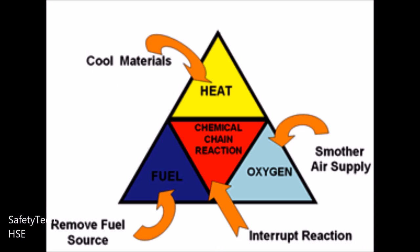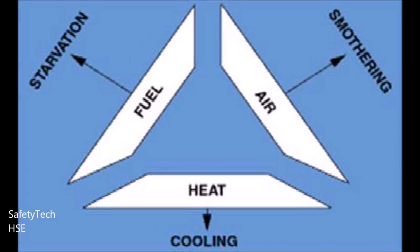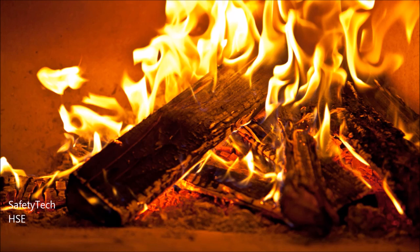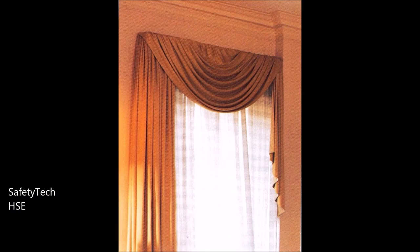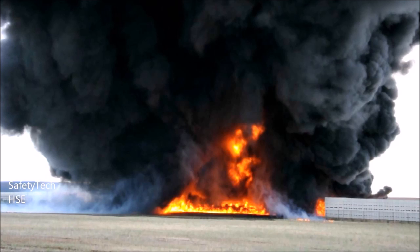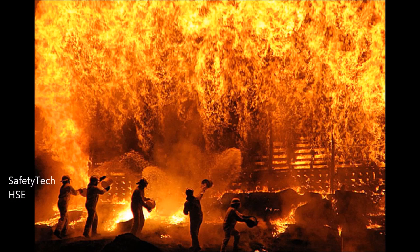How to control fire is a simple methodology — remove any one or more of these three elements. Fuel: in order for a fire to start there must be a material to burn, and this is referred to as the fuel. Fuel is any kind of combustible material, including paper, wood, fabric, plastics and rubber, oils, liquids, gases.